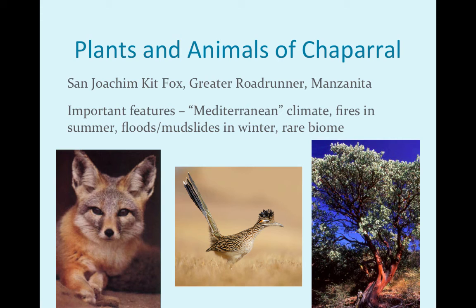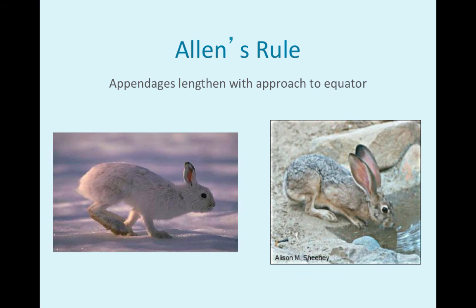There you have a San Joaquin kit fox and the roadrunner as well. You don't have to know exactly what Allen's rule is, but just be aware of the trend: the closer you get to the equator, the longer the limbs get — longer legs, longer ears. That's largely to give more surface area for blood vessels to flow near the skin, because most animals don't sweat. If you look at the ears on these two animals, you can see one lives in a cold snowy area and one lives in a warm area all the time.